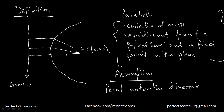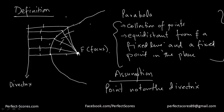So let me reiterate the definition: a parabola is a set of all points in a plane which are equidistant from a point and a line. So this distance is equal to this distance, this distance is equal to this distance. As the parabola expands further, the distance between the point and the parabola keeps on increasing, and so does the distance between the line and the parabola, so this definition stays intact. The assumption is that the point does not lie on the directrix.